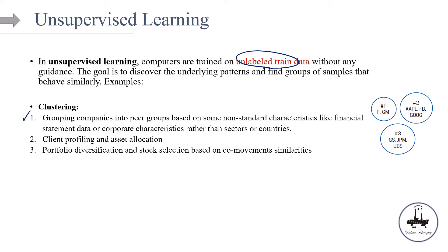In finance, we usually group the companies based on their sectors or countries. But what if you want to make that grouping? You want to make those companies into peer groups based on some non-standard characteristics like financial statement data or corporate characteristics. Remember, we don't necessarily know what we're looking for. And we hope that maybe some pattern pop up that we didn't completely expect. So this is one example.